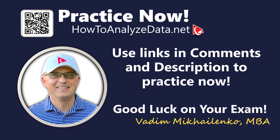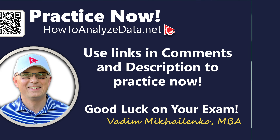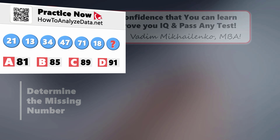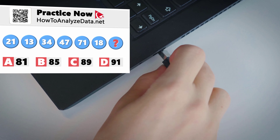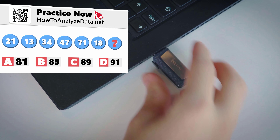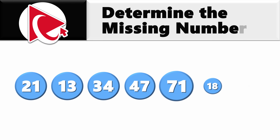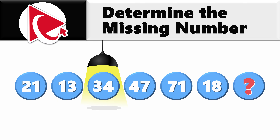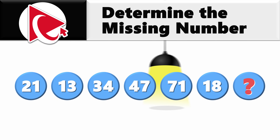This tricky question reminded me of my luck with a USB stick — it always feels like a 50-50 chance, but somehow I never get it the right way. But I'm pretty sure you will. You're presented with a sequence of numbers: 21, 13, 34, 47, 71, 18.